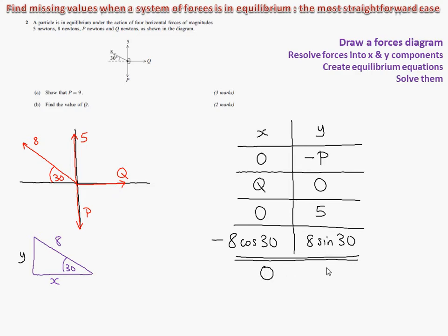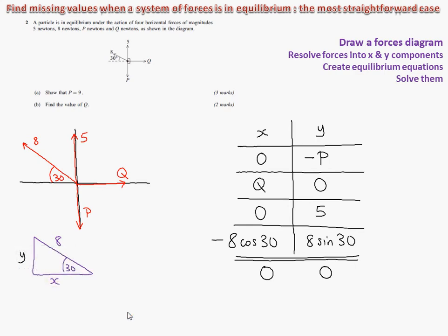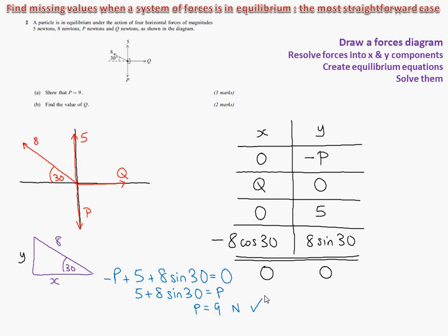It's in equilibrium so both component sums are 0. We can now create two equilibrium equations. Starting with the Y components: minus P plus 0 plus 5 plus 8sin30 must equal 0. Adding P to both sides gives P equals 5 plus 8sin30. Since 8sin30 equals 4, P equals 9 newtons — which is what the question asks you to prove.